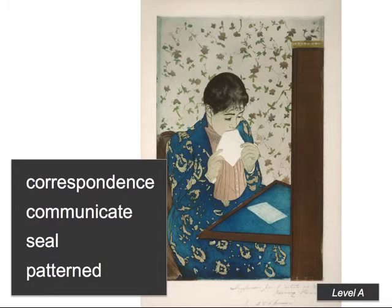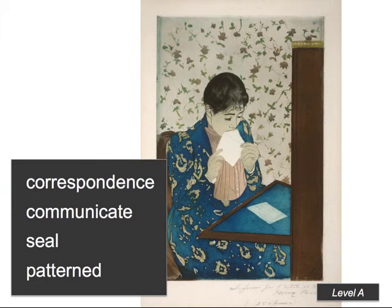Here is a print by Marie Cassatt from Level A. In Level A, four new vocabulary words are introduced in each lesson. Levels B through D introduce six new words per lesson. The words are not displayed on the actual images, as the focus is on oral vocabulary and the natural acquisition of language.